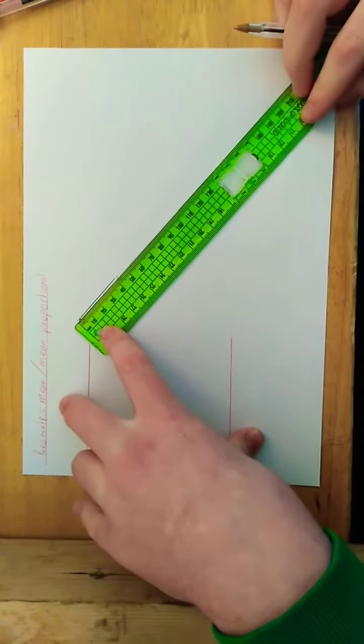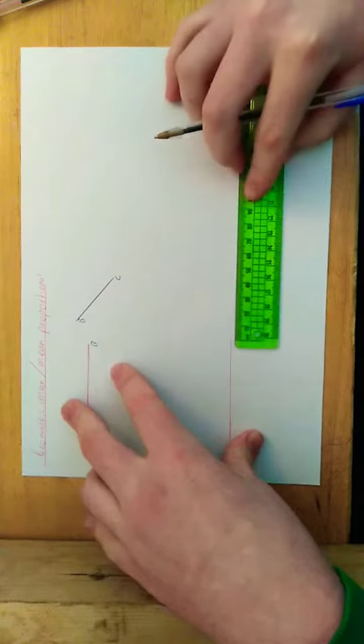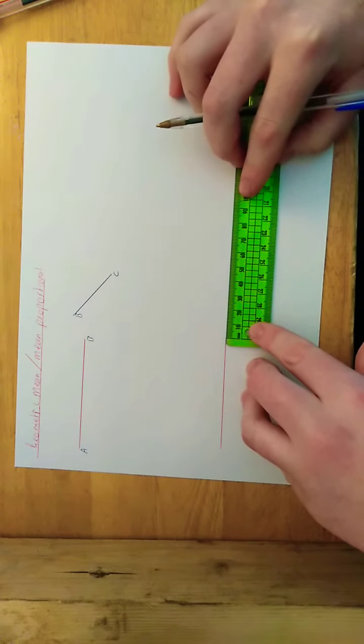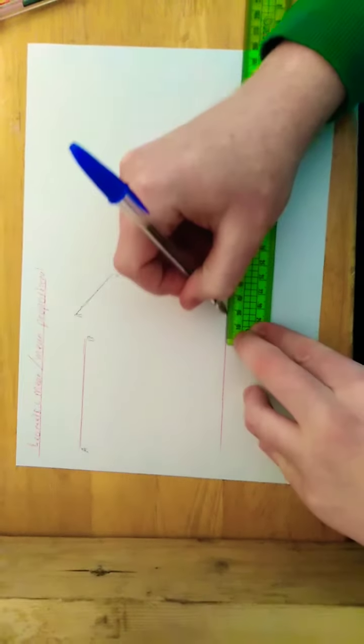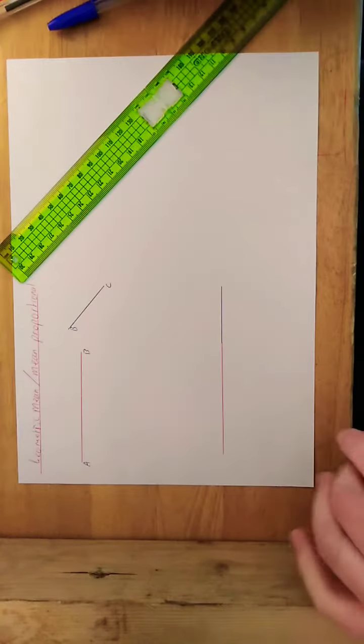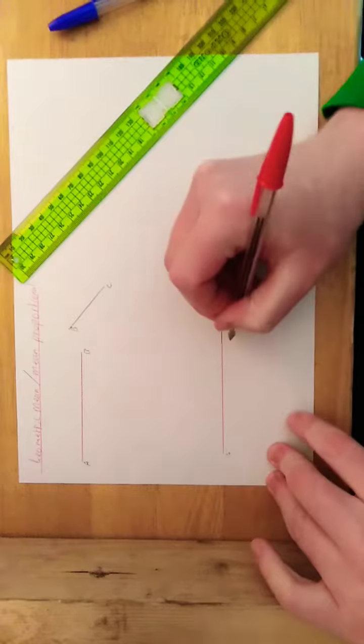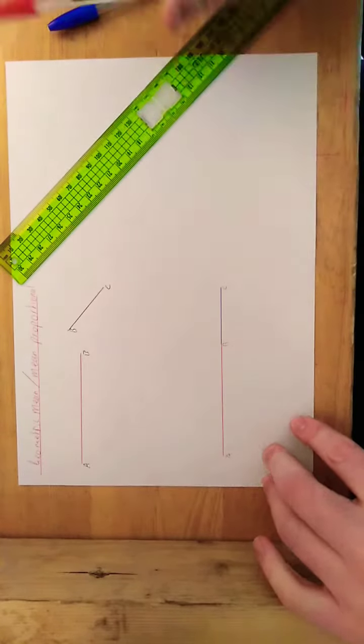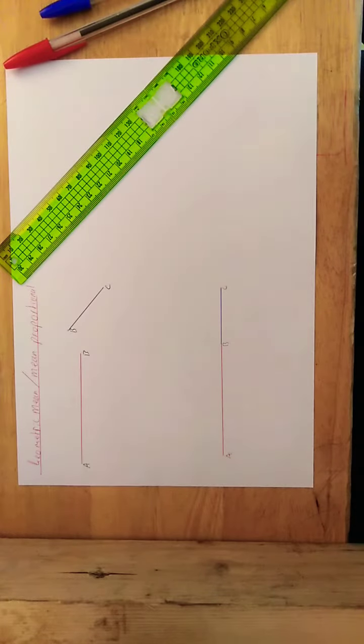And then this here is four centimeters. For the algebraic mean, you would actually just add them together and divide them by two, but for this one we want to get the geometric mean, which means we're going to have to perform a perpendicular bisector.